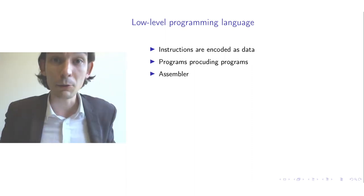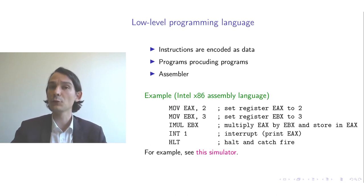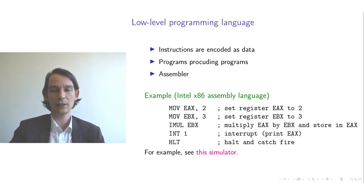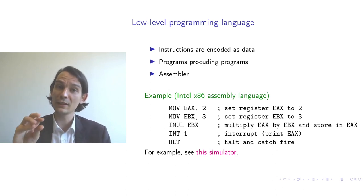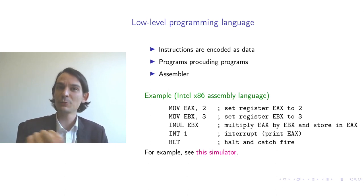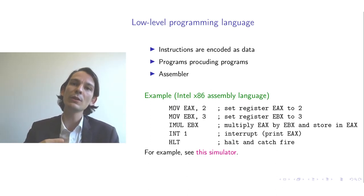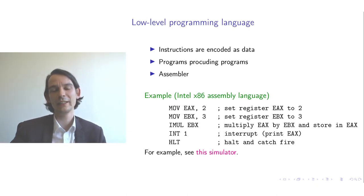To give a concrete example of how an assembler works, consider that many modern devices — desktops, laptops, and mobile phones — use an assembly language designed by Intel called Intel x86 assembly. On the screen you can see a number of instructions written in this low-level programming language, because they are human-readable text. An assembler takes this text as input and translates it into the encoding of instructions that the machine can execute.